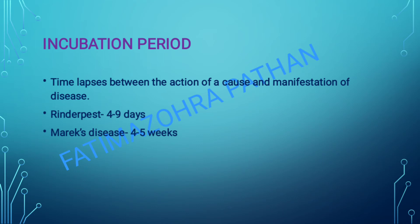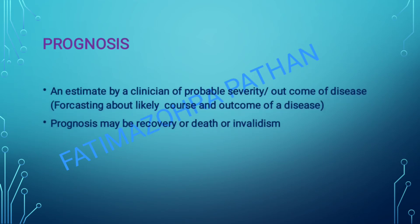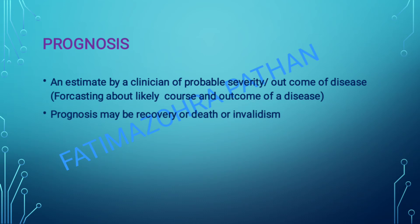Marek's disease mein chaar se paanch weeks ka hota hai. Next step — prognosis. Prognosis is an estimate made by a clinician of the probable severity or outcome of disease — forecasting about the likely course and outcome of disease. Prognosis may be recovery, or death, or invalidism — ya toh disease hua toh recover hoga, ya toh death hoga, ya invalidism matlab beech mein kisi sthiti mein rahega.